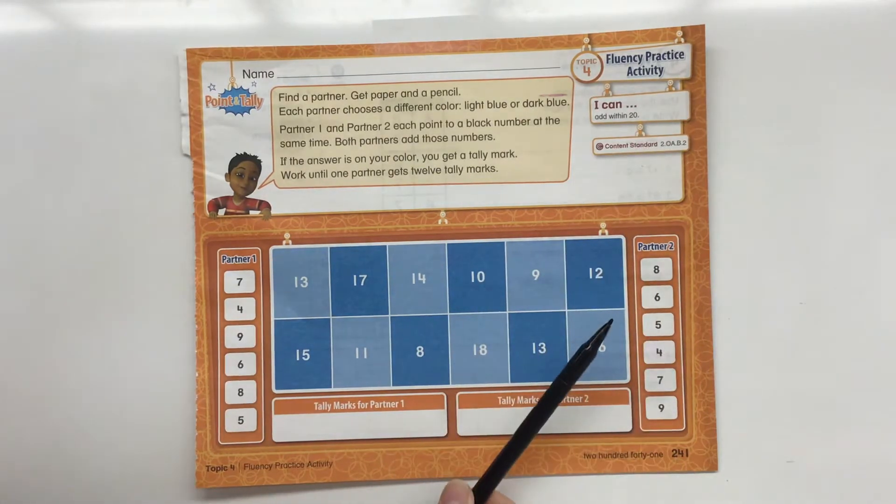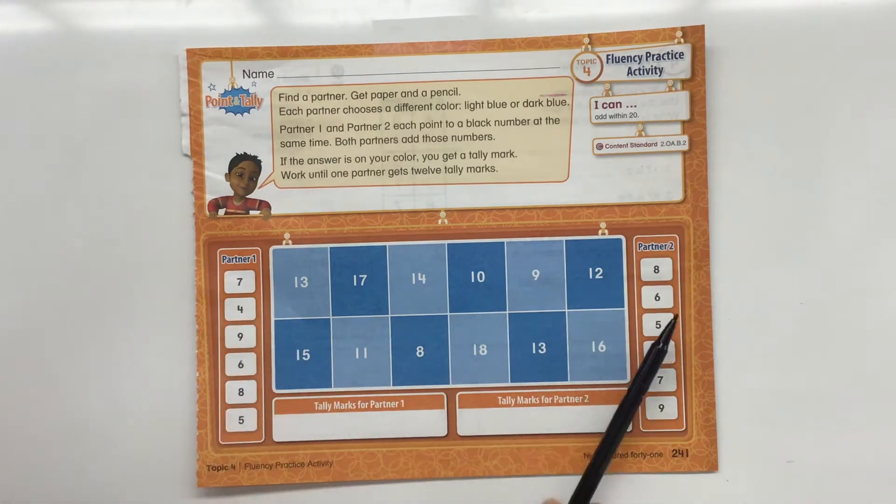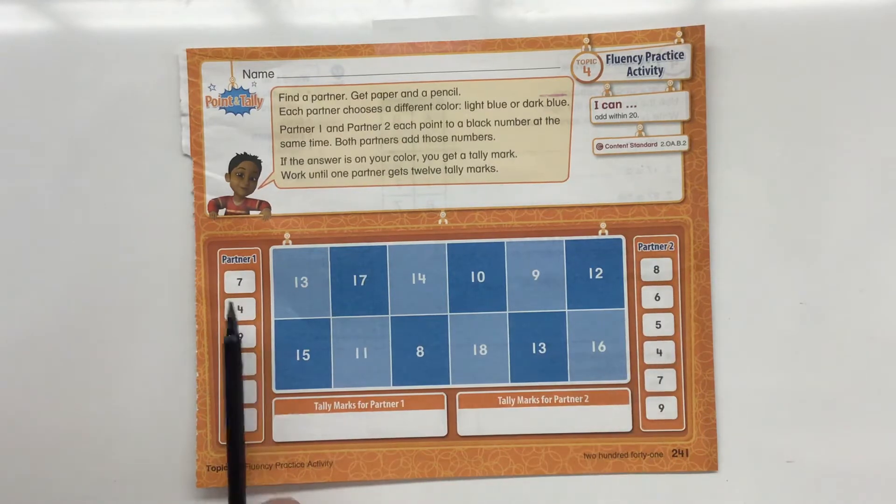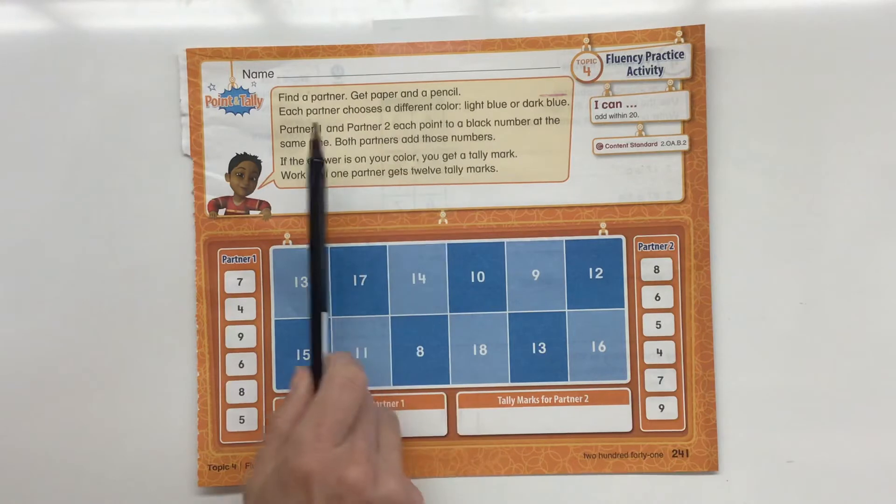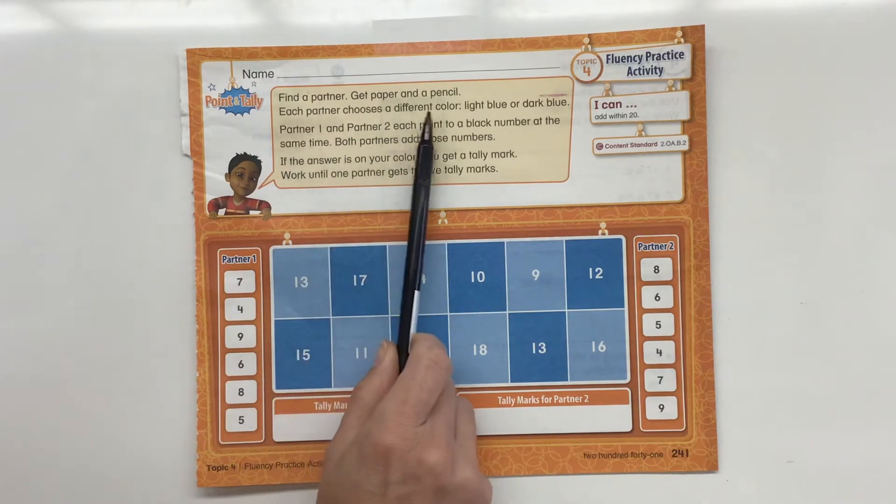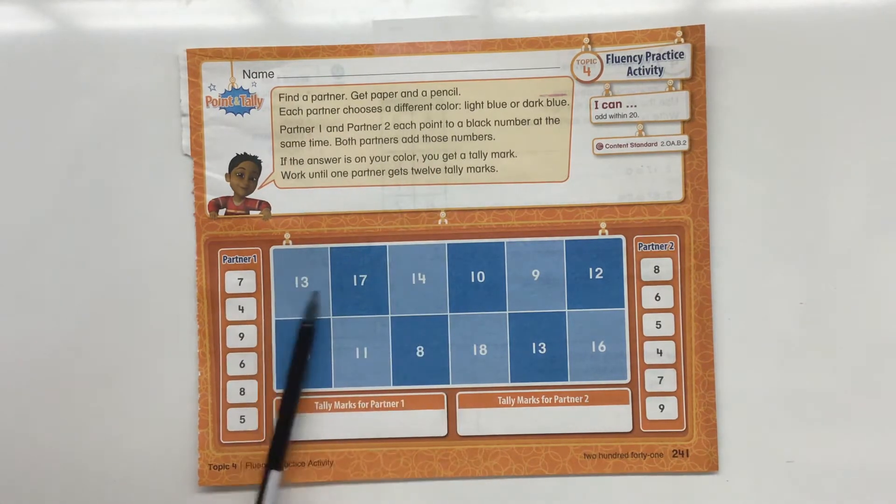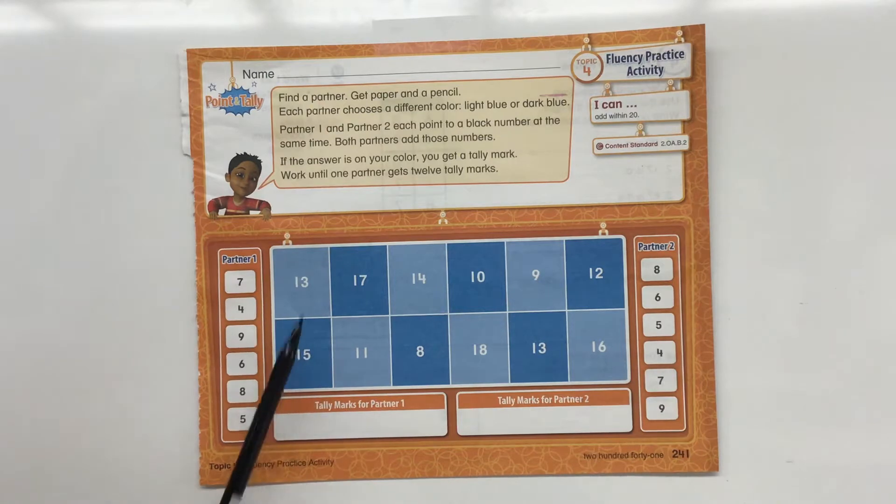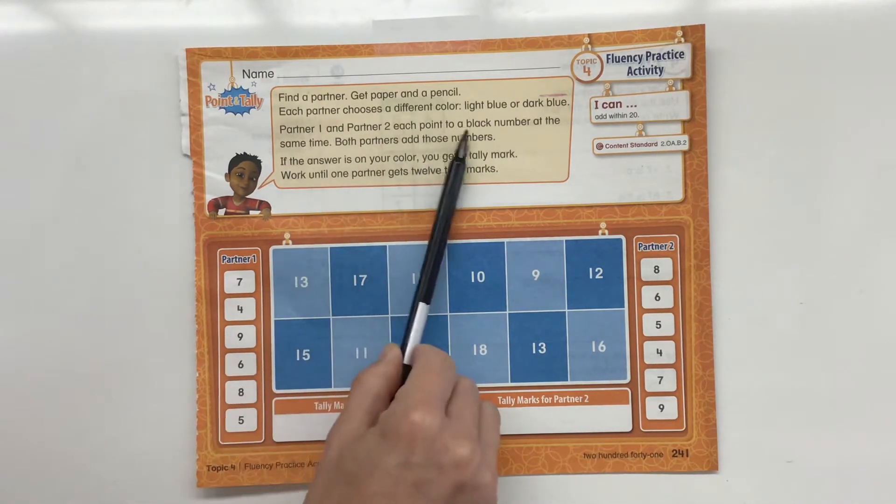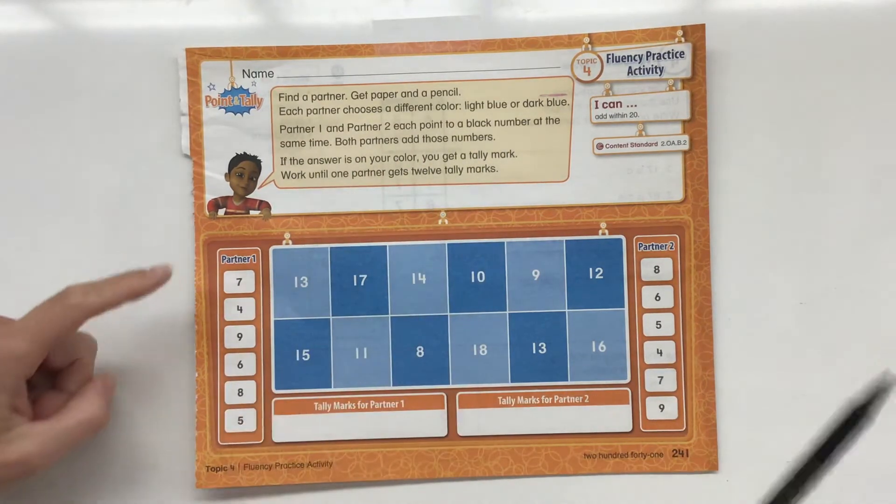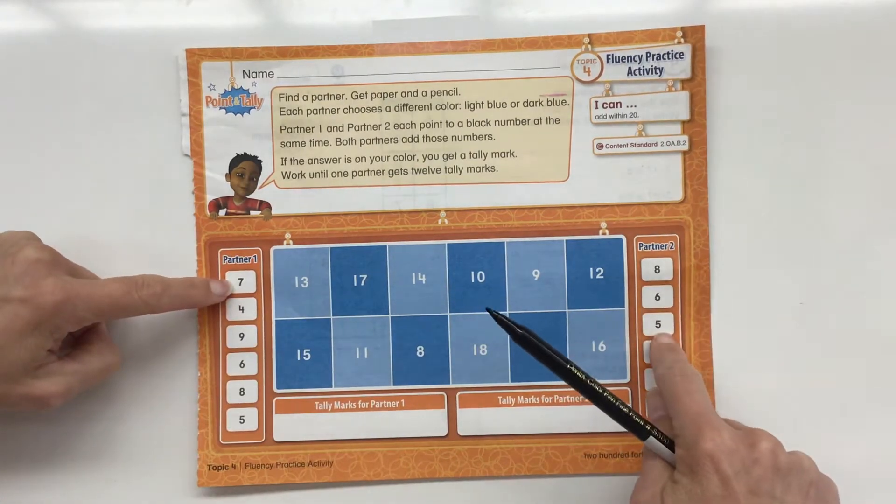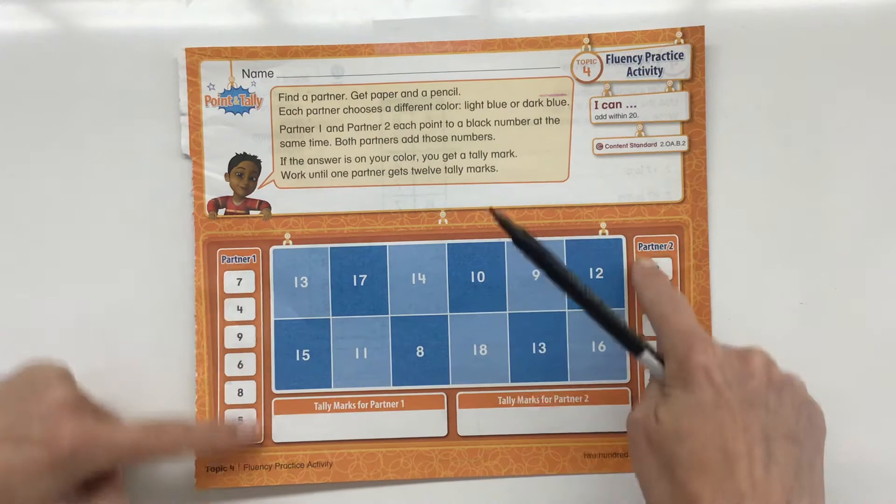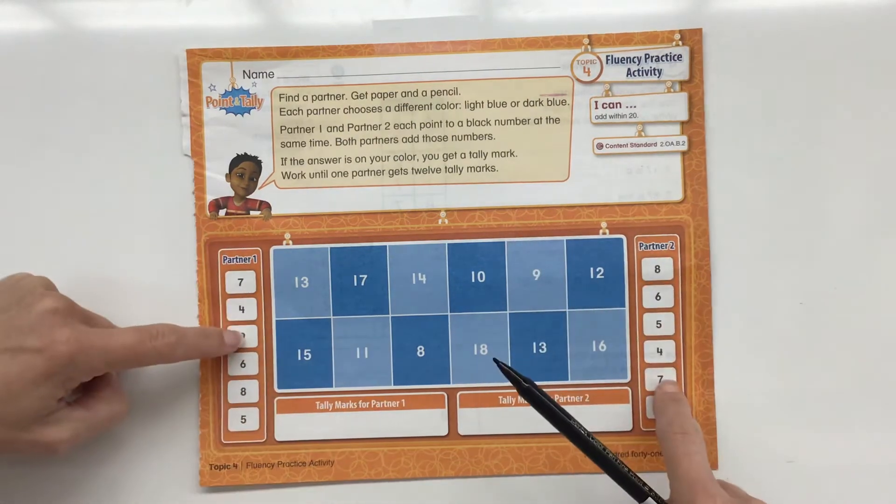So this is something you can do at home if you'd like to with a partner. You'll be one partner and someone else will be a partner. You're going to get a paper and pencil. Each partner chooses a different color, so you can either be light blue or dark blue. Partner one and two each point to a black number at the same time. So if you're partner one, you might point to seven. Partner two might point to five. So you'll just go up and down randomly picking numbers on the side.